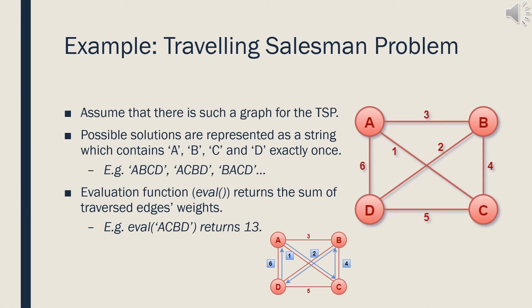Let's try to understand how steepest ascent hill climbing works on the traveling salesman problem. Assume we have a simple weighted graph. Possible solutions can be represented in permutation form, meaning a solution is a string containing A, B, C, and D exactly once. For example, ACBD and BACD are two possible solutions, representing the order of traversed cities. The evaluation function eval returns the sum of weights of traversed edges. For instance, eval(ACBD) returns 1 plus 2 plus 4 plus 6, which is 13.